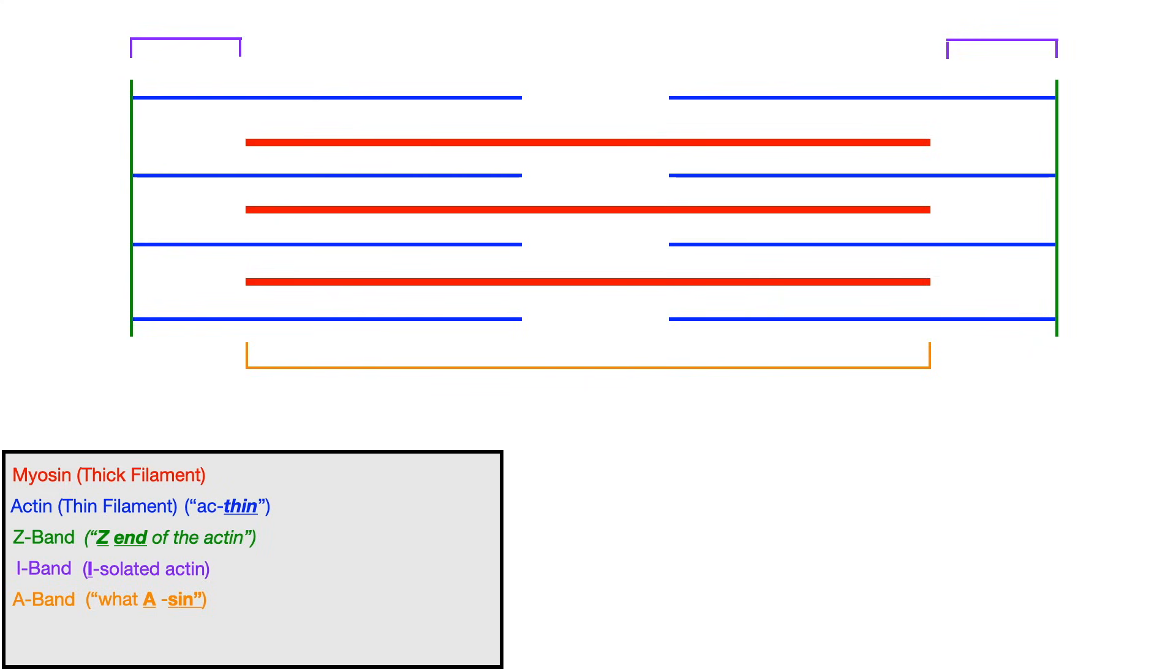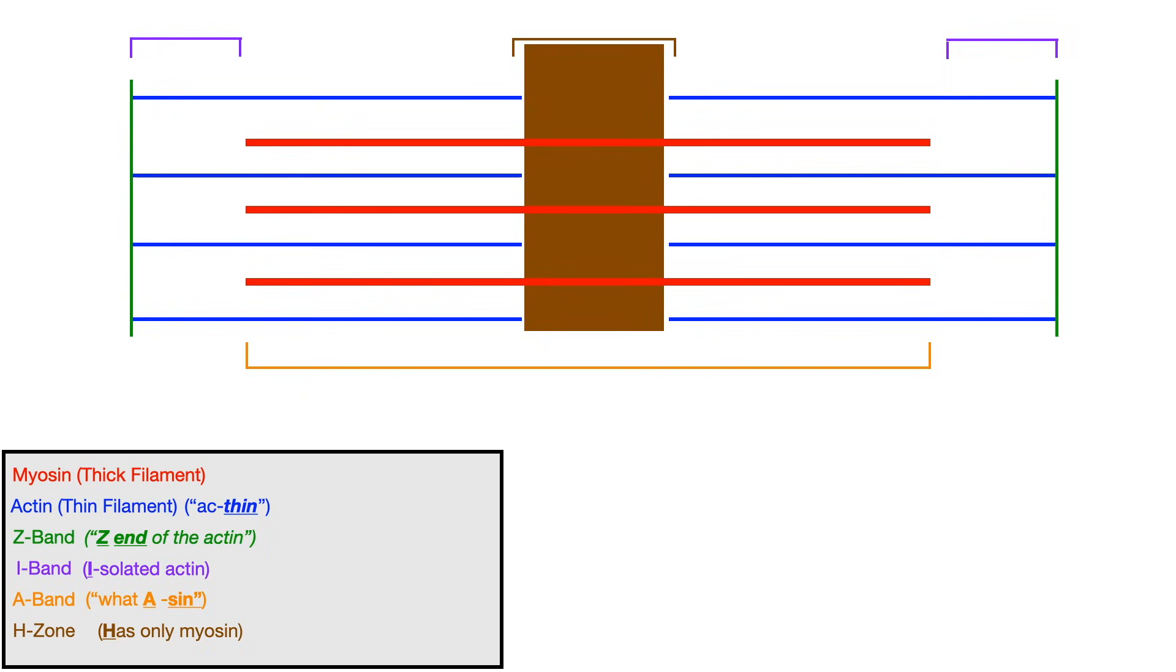The next area of the sarcomere you need to know is the H zone. Now the H zone is the area directly in the middle. And that area only contains myosin. So look over the center of our sarcomere structure right now. You see that center area right here where the brown rectangle is shown. And if I superimpose that behind the areas that could potentially have thick or thin filament, you can see that this area only contains myosin because the actin terminates before the H zone. So the H zone has myosin running across it, but it does not have any actin. This is the H zone. And I want you to memorize this by saying it has only myosin. The H in has for H zone. And it's shown here in brown.